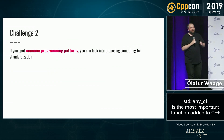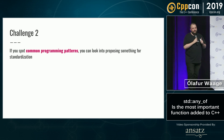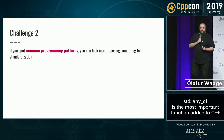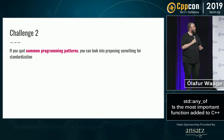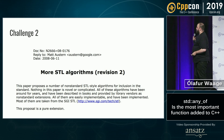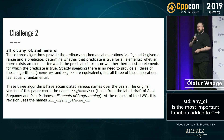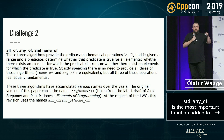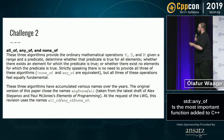Challenge two is: if you spot a common programming pattern, you can also look into proposing something for standardization, because the standardization for any_of was not complicated. Here's the header of the paper — 'More Algorithms' by Matt. You're proposing some non-standard STL. Here are the two paragraphs that define this, with some wording at the end — but generally, that's it.